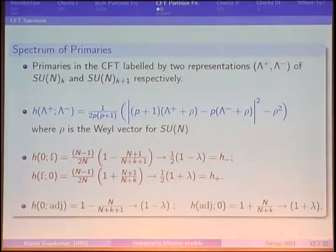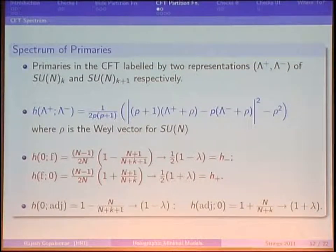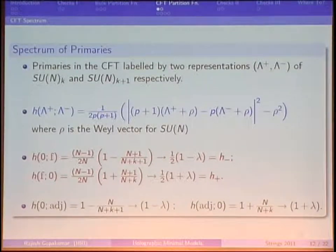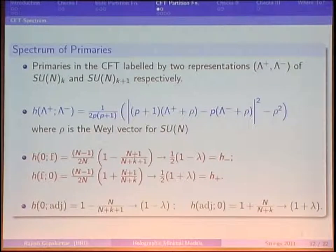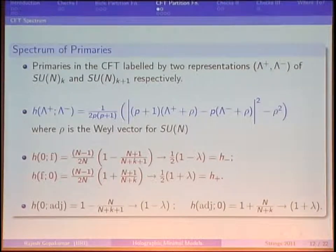Another example: if you consider the adjoint representation, the adjoint-zero combination gives, in the 't Hooft limit, (1 − λ), and the zero-adjoint gives (1 + λ). These are just 2H− and 2H+ respectively. This is something that had to happen if these were to be interpretable as multi-particle states, and is already an encouraging sign that these primaries can potentially rearrange themselves into multi-particle states of a couple of fields in the bulk.